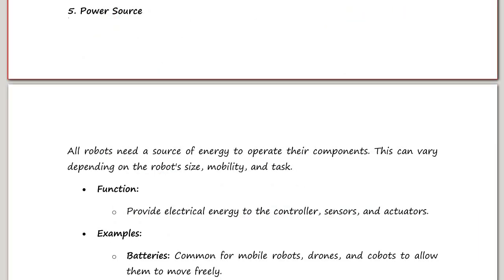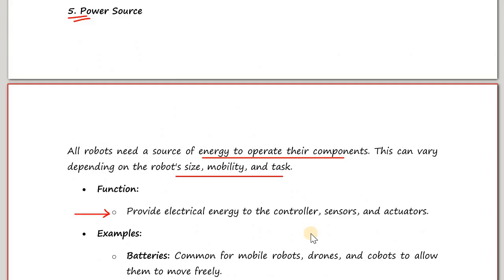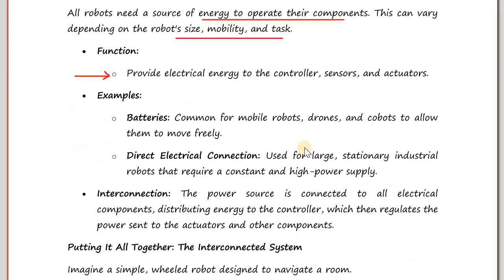The last component is the power source. All these are electrical devices, so they need electrical energy to operate. This can vary depending on the robot's size, mobility, and task. The power source provides electrical energy to all other components — the controller, sensors, and actuators — and examples include batteries or a direct electrical connection.